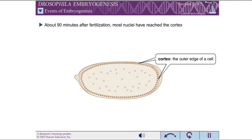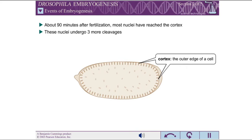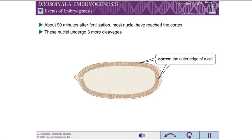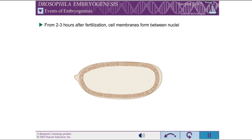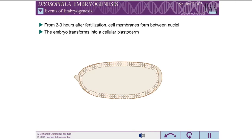At this point, the nuclei gain the ability to transcribe RNA Polymerase 2 genes and produce proteins. They undergo another three rounds of cleavage, leading to a dense packing of about 6,000 column-shaped nuclei enclosing the central yolk.